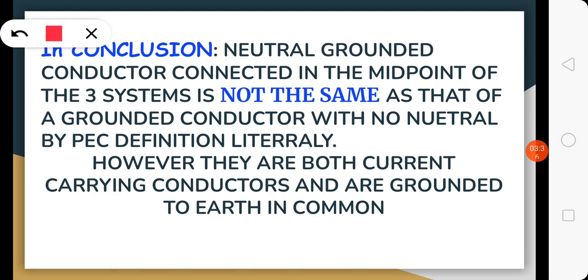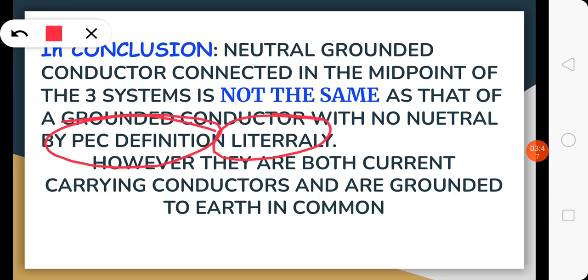The neutral conductor is connected in the midpoint of systems as we discussed. It is not the same as the grounded conductor with no neutral by PEC definition. This is the most important thing. However, they are both current-carrying conductors and are grounded in common. But the PEC states that the real neutral grounded conductor is connected in the midpoint of every system.